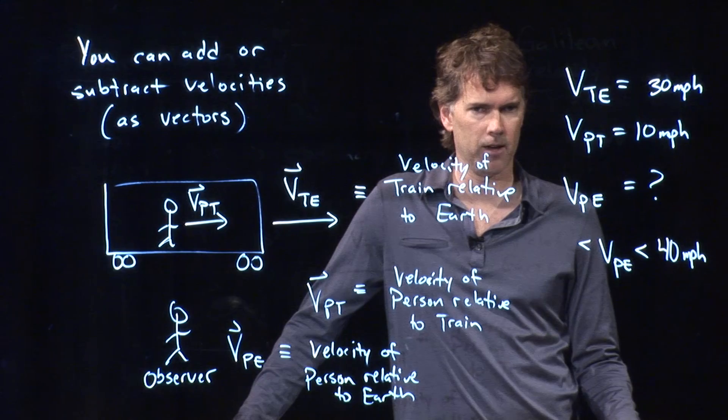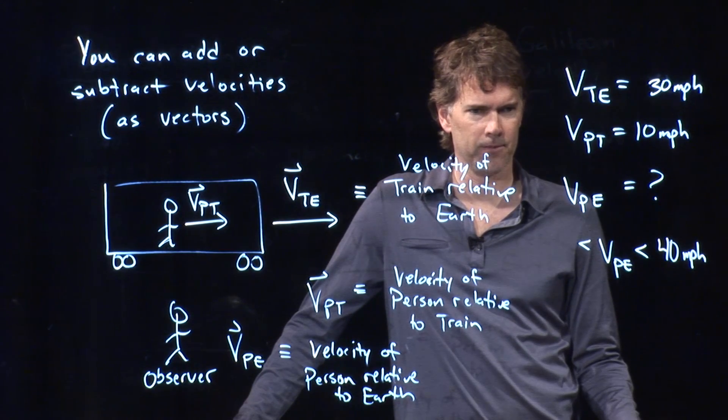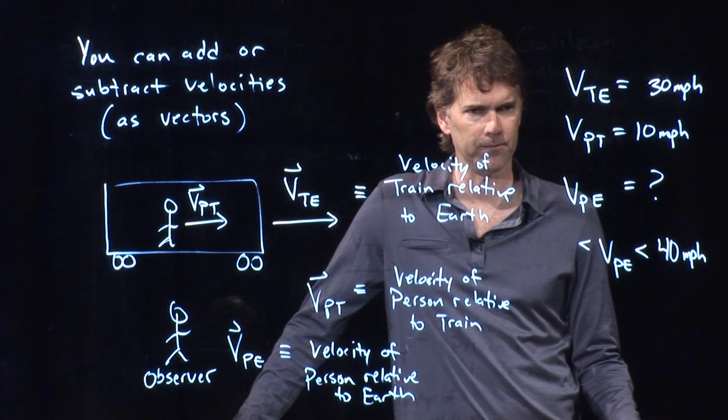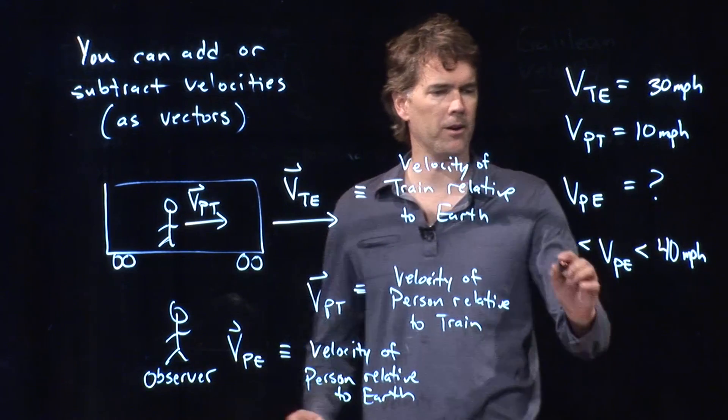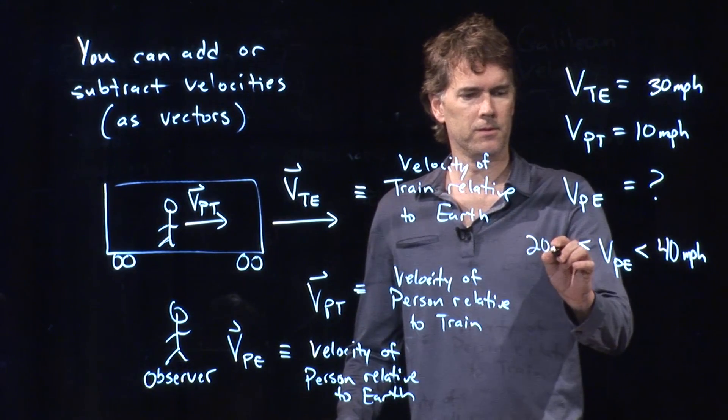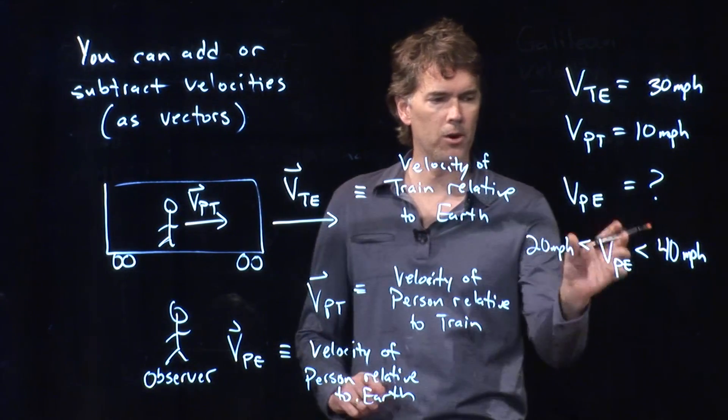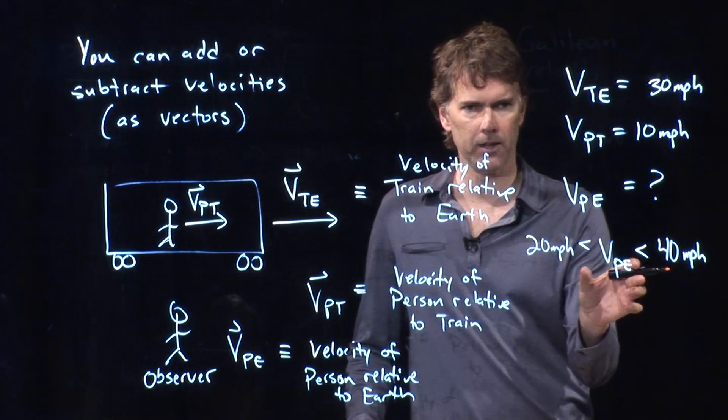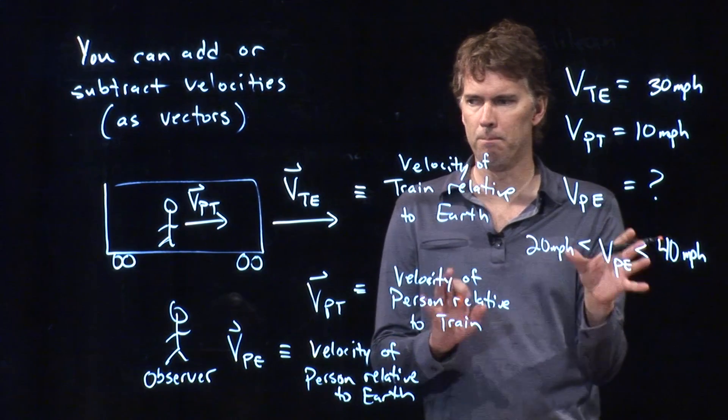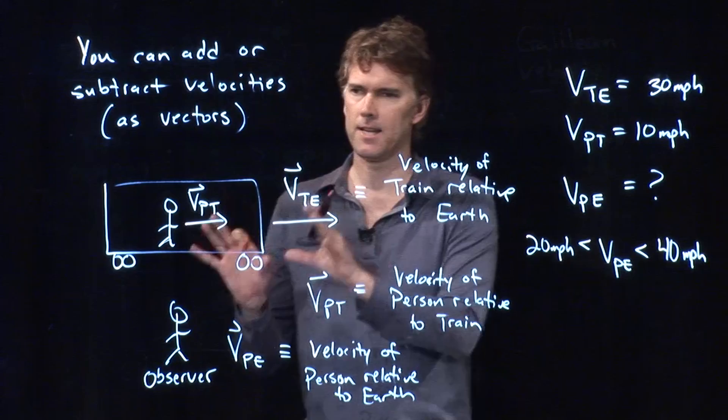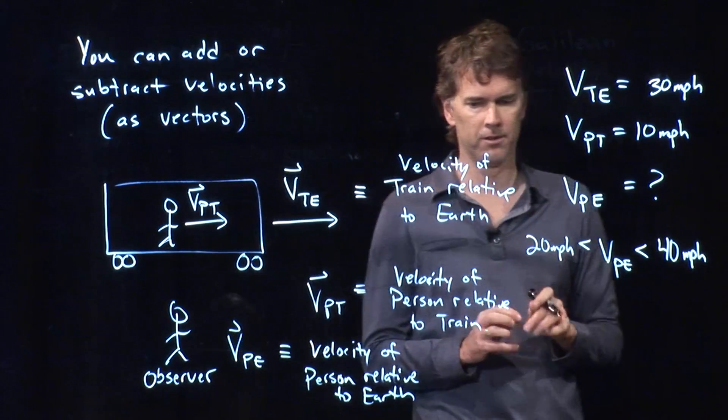What about the smallest it could be? Anybody have a thought on that? Yeah, Ian? 20 MPH. 20 MPH. Those are the bounds on VPE. This already makes sense to you, but let's put it in the context of vectors.